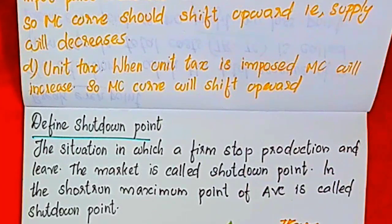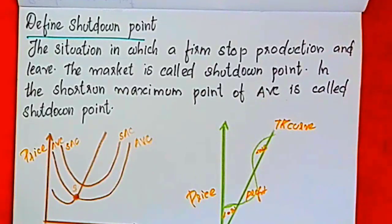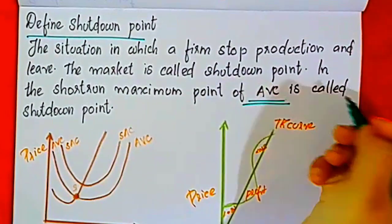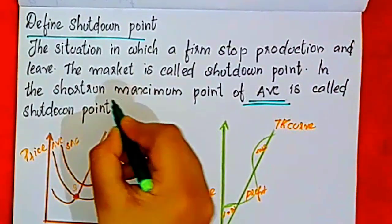The firm is going to stop production. In the short run, the minimum point of AVC is called the shutdown point. You need to learn about the short run for this concept.